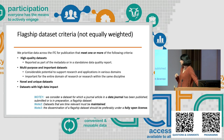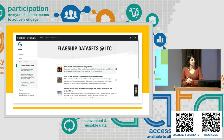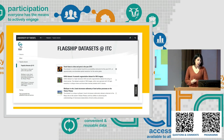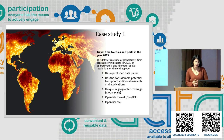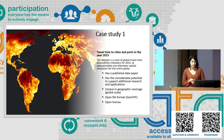Publication of a flagship dataset should be under a fully open license. Based on these criteria, I selected three datasets so far at ITC. The first is travel times to cities and ports in the year 2015. I chose this dataset — global travel time accessibility indicators for 2015 — because it has already published a data paper, has an open file format, is published under an open license, has potential to support other researchers, and is unique in resolution and geographic coverage.